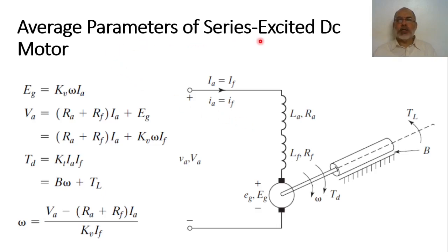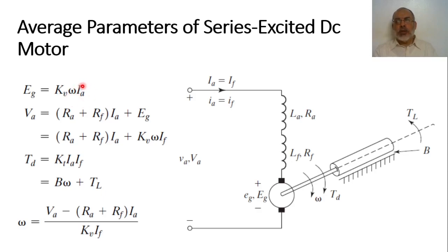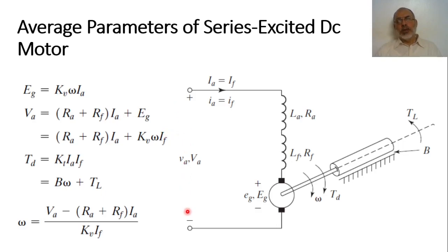The average parameters of the series excited DC motor correspond to the equivalent DC circuit. The back EMF at the rotor or armature, EG, equals the voltage constant KV multiplied by the speed Omega, multiplied by the armature current Ia. Originally this included the field current, but since Ia equals If, we simply write KV × Omega × Ia.